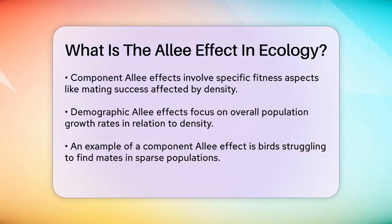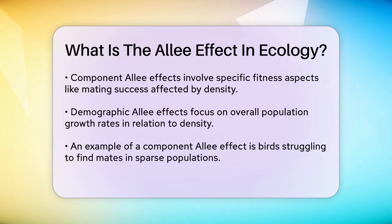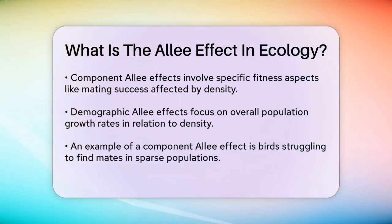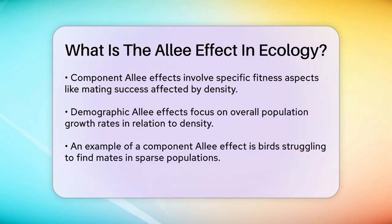For example, consider a species of birds where finding a mate is crucial for reproduction. If the population is too sparse, birds may have a hard time locating a partner, leading to lower reproduction rates. This is an example of a component Allee effect.